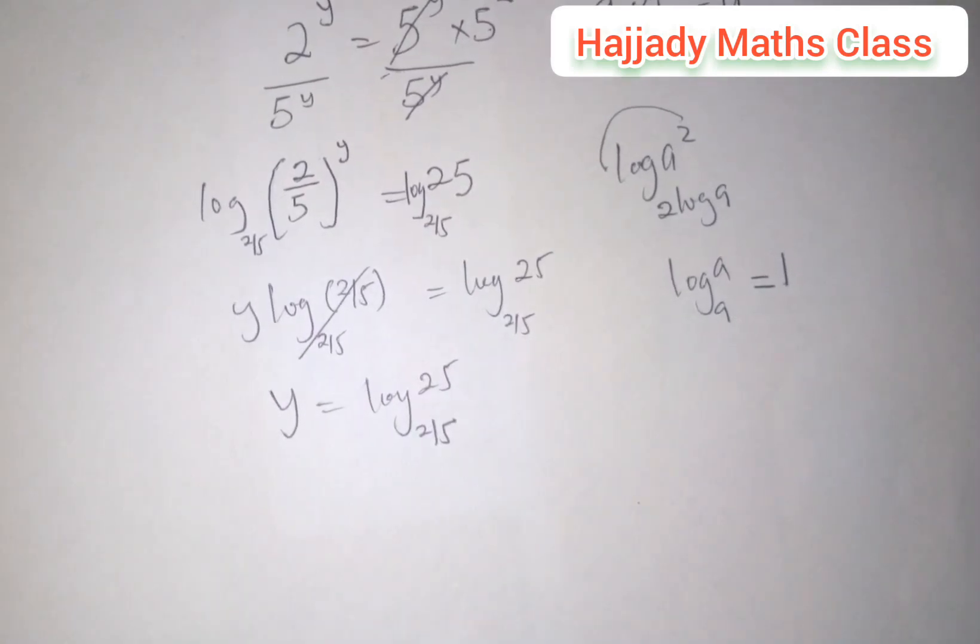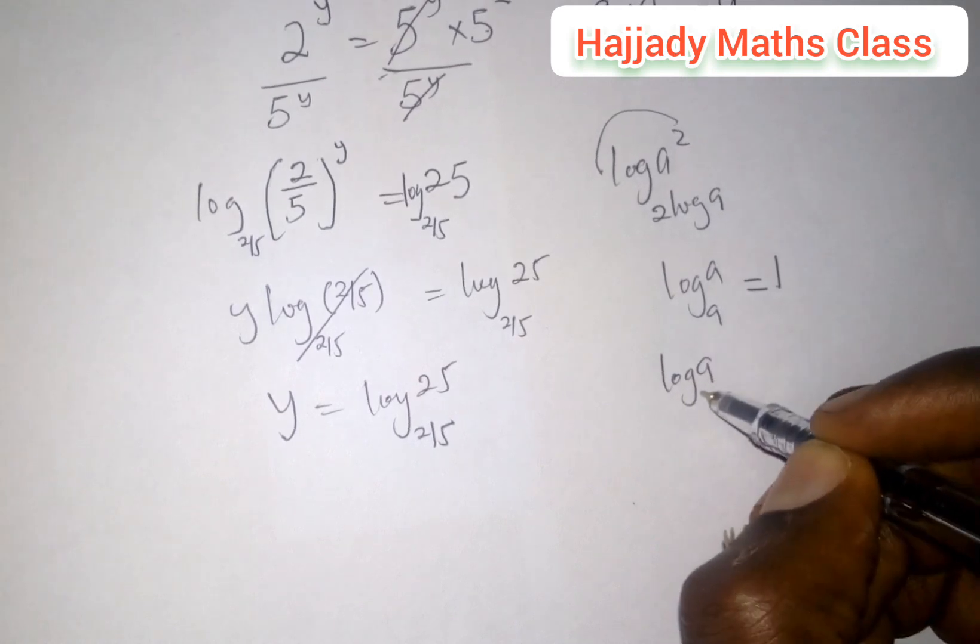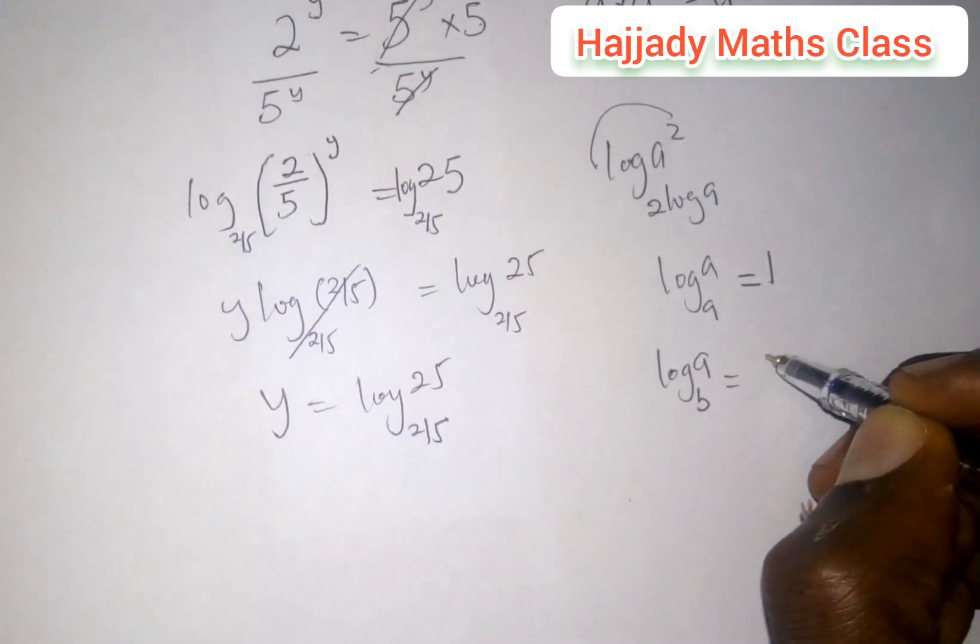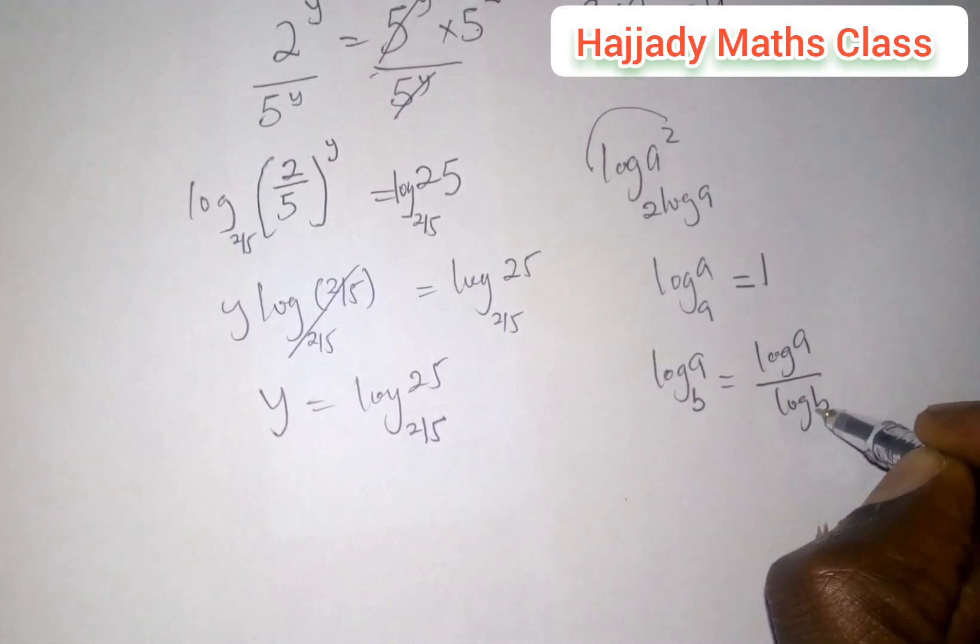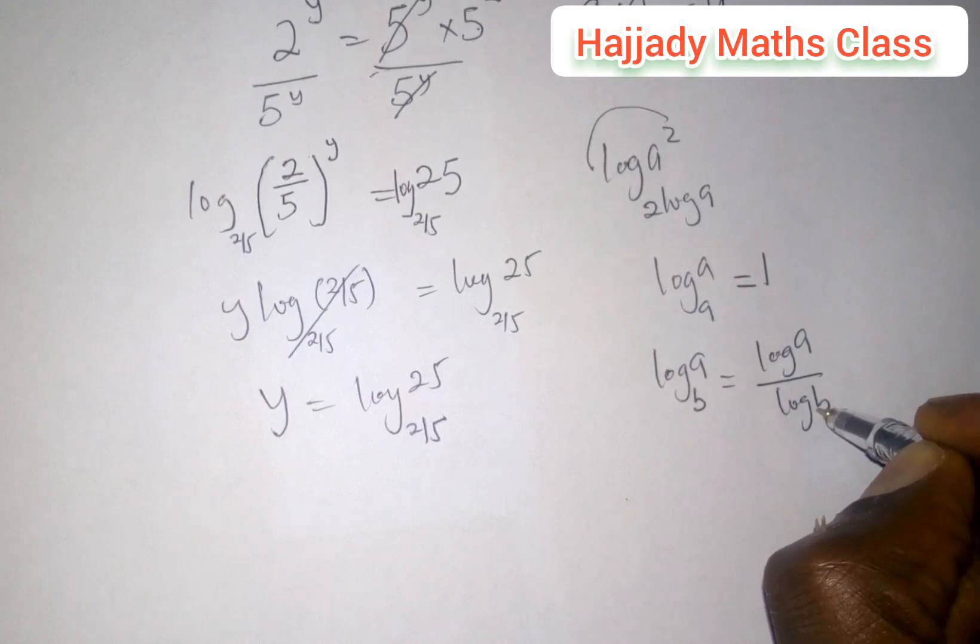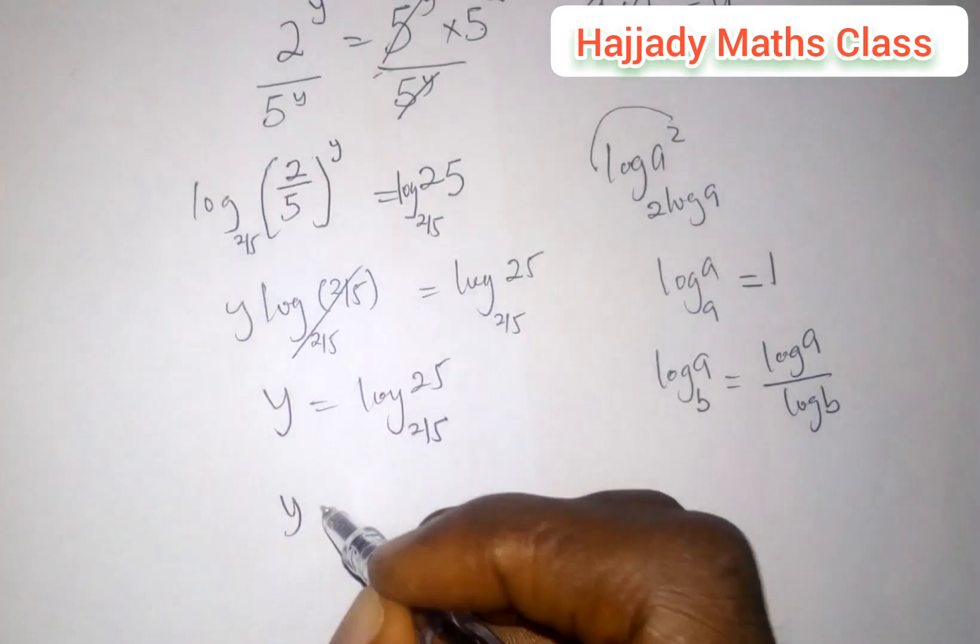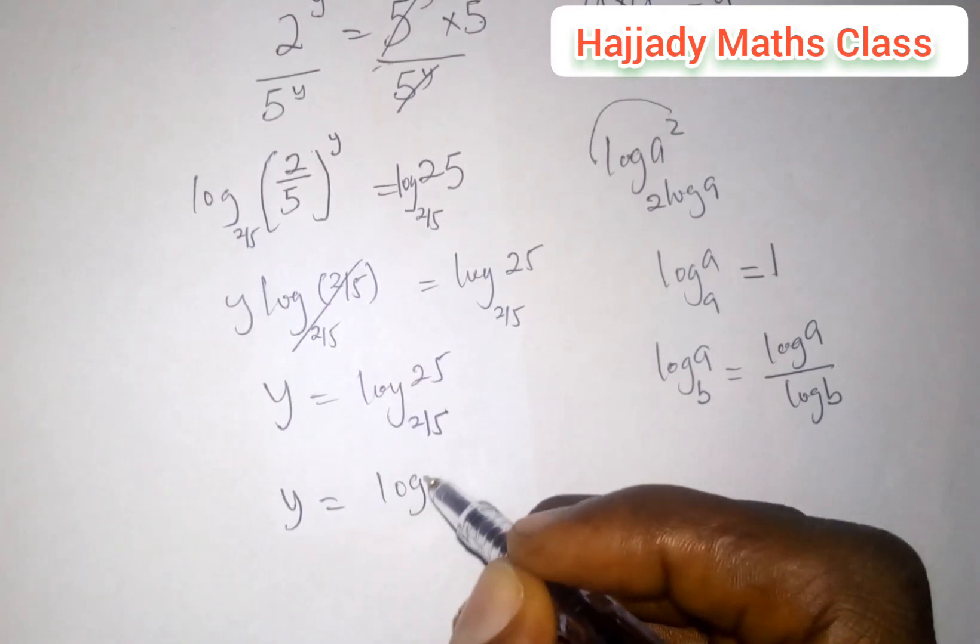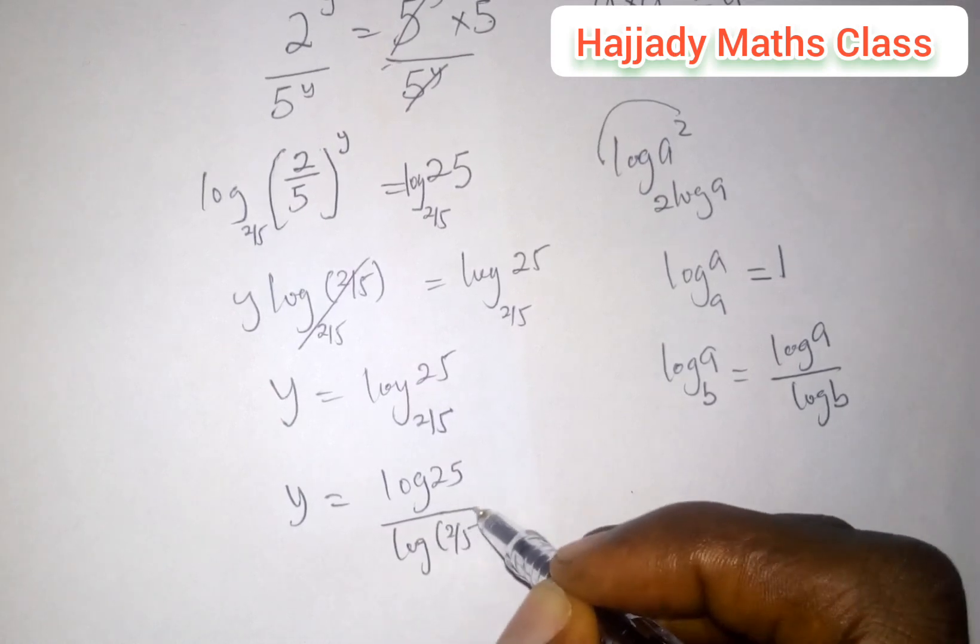From this, you can decide to leave your answer like this. Also, we can decide to solve further. In solving this further, there is another rule of logarithms that says if you have log a into base b, it is equivalent to log a in base 10 over log b in base 10. This is another rule of logarithms you are learning from this video. We have this simplified as y equals log 25 into base 10 over log 2 over 5.